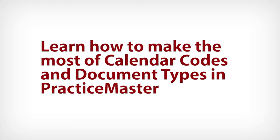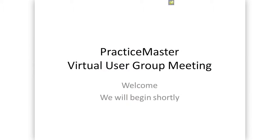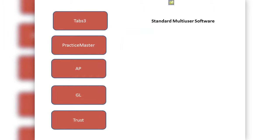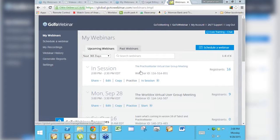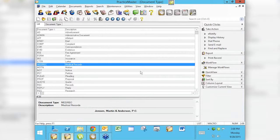Good afternoon everyone, my name is Paul and I am a nerd. This is the September 2015 Practice Master virtual user group meeting. Today we are talking about some background stuff — calendar codes setup including color, and using color in the calendar, setting up codes to represent things. Mary Jo is going to talk about that, and I am talking about document types and how to set them up. I'll get us into Practice Master and Mary Jo will take over and start talking about calendar codes.